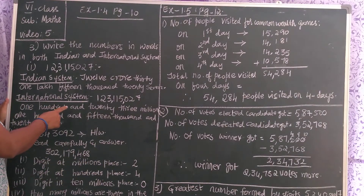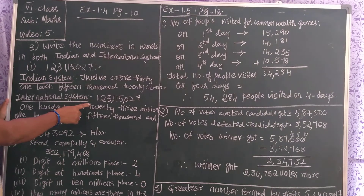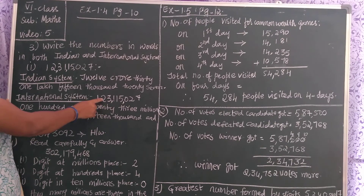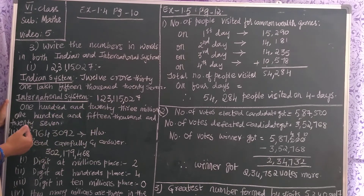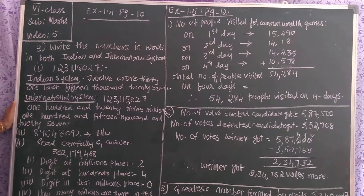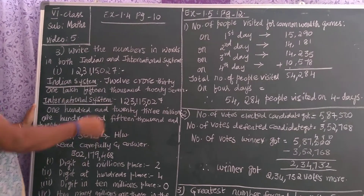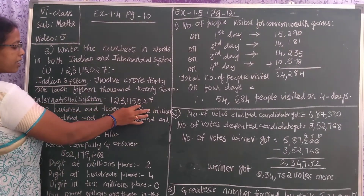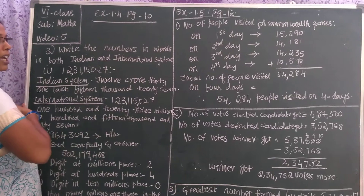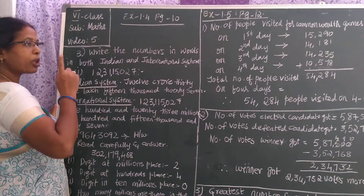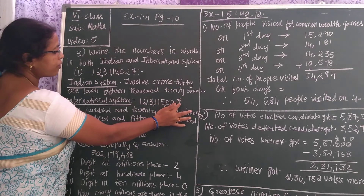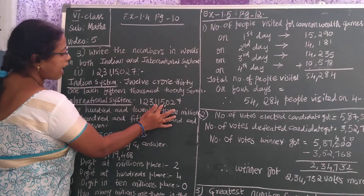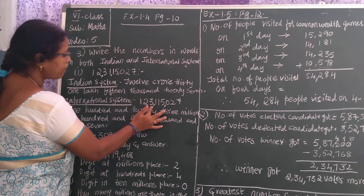In international system of numeration, the number is 1, 2, 3, 1, 1, 5, 0, 2, 7. After every three digits from the right side, you have to put the commas. From your right side you should see — I am starting from here. After three digits I put a comma, after three digits again I put a comma.